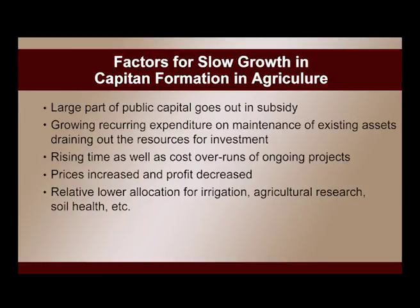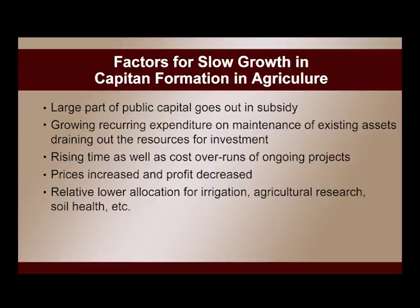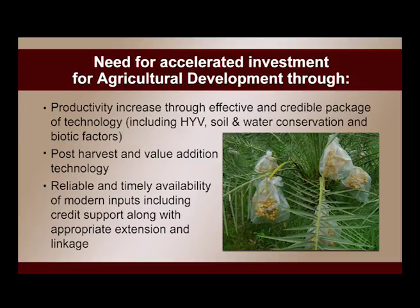Factors for slow growth in capital formation in agriculture include: a large part of public capital going to subsidies, growing recurring expenditure on maintenance of existing capital stock, and rising time and cost overruns of ongoing projects — all of which drain resources available for investment. Price increases and capital decreases, along with relatively lower allocation for irrigation, agriculture research, and soil health, also restrict capital formation.